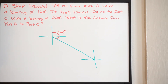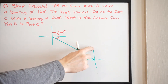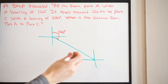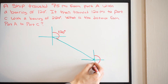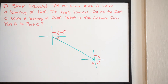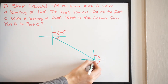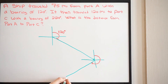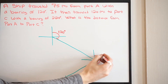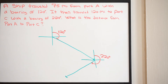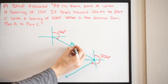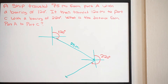The problem says the ship then traveled 120 miles to port C with a bearing of 220 degrees, so we put that bearing on. Starting north and going clockwise, 220 degrees puts us in the third quadrant. Drawing our second vector in that direction, we label the first vector as 75 miles and the second as 120 miles.